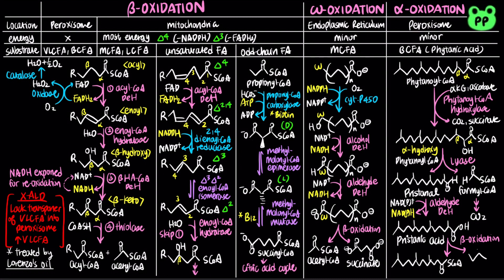The shortened branched-chain fatty acid can then go through another round of alpha-oxidation. Genetic defect in phytanoyl-CoA hydroxylase will result in Refsum's disease, which causes high blood levels of phytanic acid and severe neurological problems, including blindness and deafness.